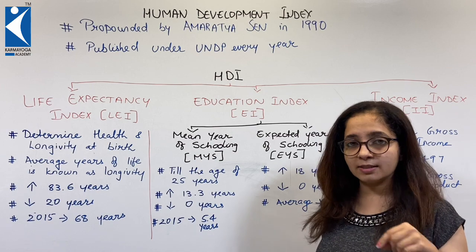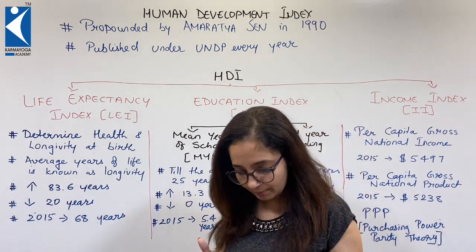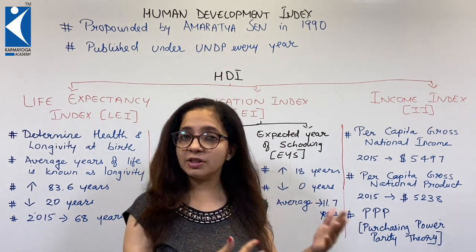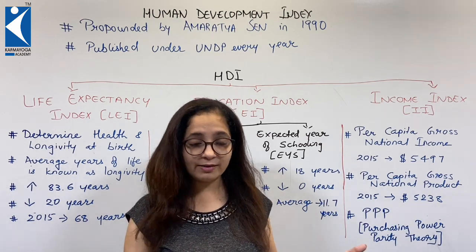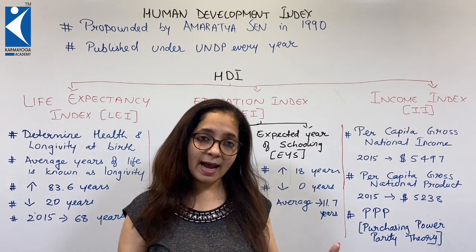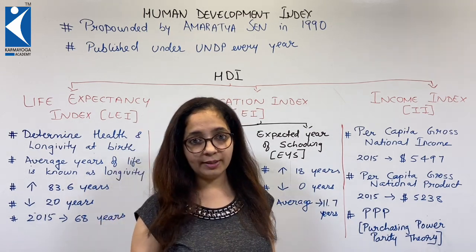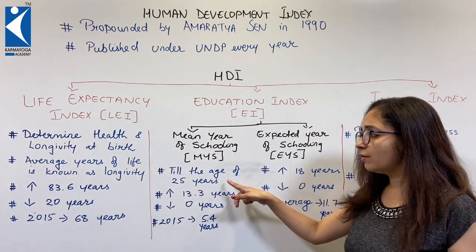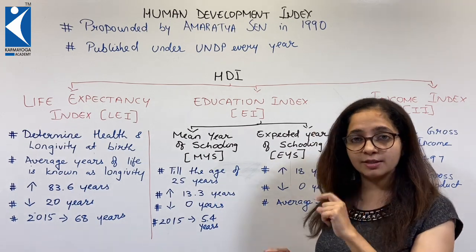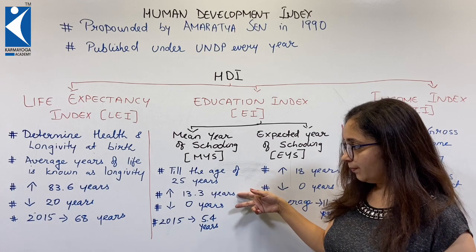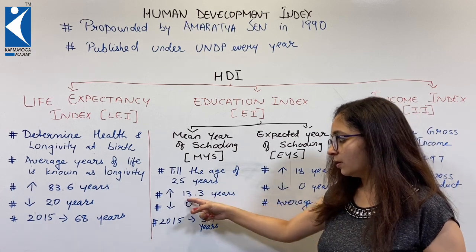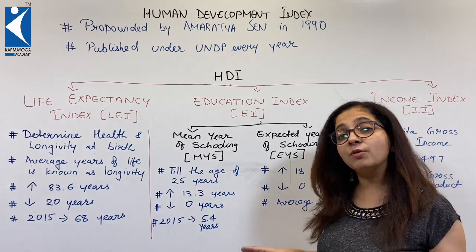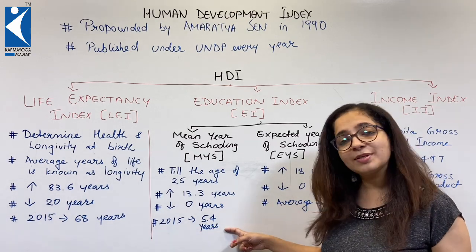For mean year of schooling, 25 years is considered as the benchmark. When you start school at age three and clear 10th at 15-16, finish 12th as an adult, graduate at 23, and finish postgraduate studies — you are almost 25. The highest mean year of schooling is 13.3 years, the lowest is zero, and in 2015, India's mean year of schooling was just 5.4 years.